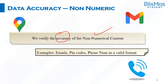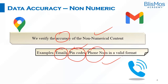Here, we verify the accuracy of non-numerical content — for example, whether the email ID given is correct, whether the pin code in the address column is right, or whether the phone number is in a valid format. You may wonder: phone number is a numeric value, right? Yes, but adding different phone numbers wouldn't help us, so we treat it as non-numeric. We need to ensure the phone number is in a valid format according to the country code — whether it is 10 digits or fewer.